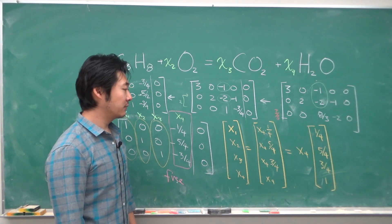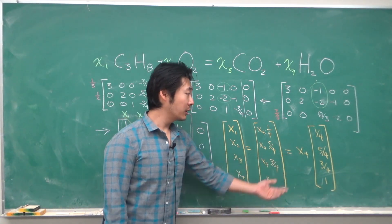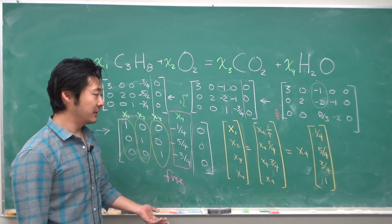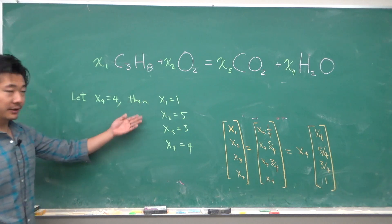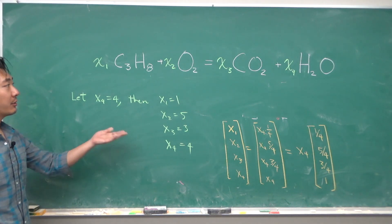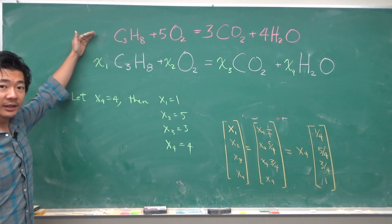And so letting x4 equal 4 will give us a nice integer solution to our chemical reaction equation. So this is our solution. So our chemical reaction equation becomes something like this.